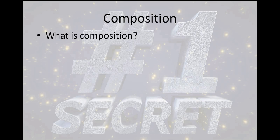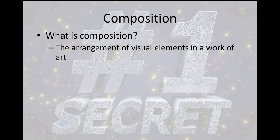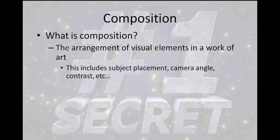What is composition? Well, composition, according to the all-knowing Wikipedia, is the arrangement of visual elements in a work of art. This includes your subject placement, your camera angle, your contrast — all those different things. It's not necessarily your objects in your scene, but it's how they work together to create a final image. It's how the light bounces off of it. It kind of encompasses the whole thing — what you see is the composition.